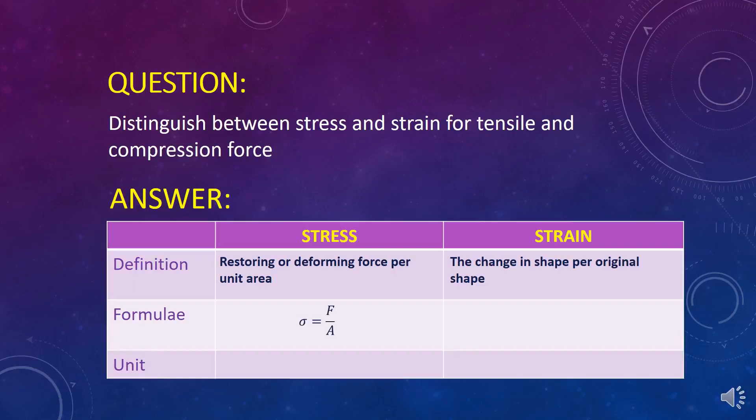Formula for stress is sigma equals F over A. Strain, epsilon.